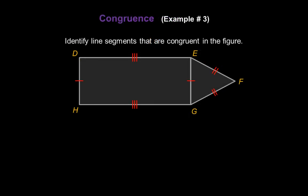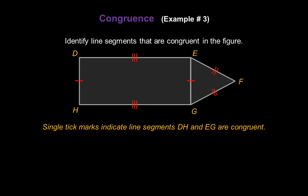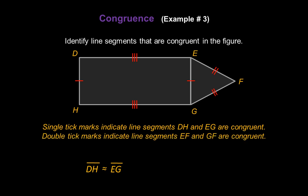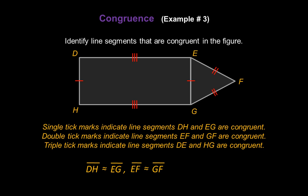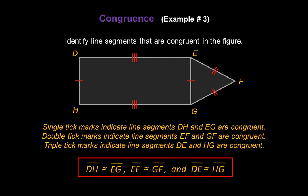Now let's look at an example of congruence. Identify line segments that are congruent in this figure. Single tick marks indicate line segments DH and EG are congruent. Double tick marks indicate line segments EF and GF are congruent. Triple tick marks indicate line segments DE and HG are congruent. We've now identified all of the congruent lines in this figure.